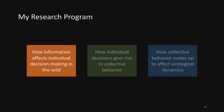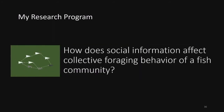We just saw that social information can affect individual decision-making on very short timescales. What remains unclear is how this can scale up to affect collective behavior over much longer timescales. That led us to ask the second question: how does social information affect collective foraging behavior of a fish community? Here, the decision of interest is whether to enter into these open, dangerous, highly productive feeding grounds to eat, or to exit into adjacent shelter to avoid getting eaten.